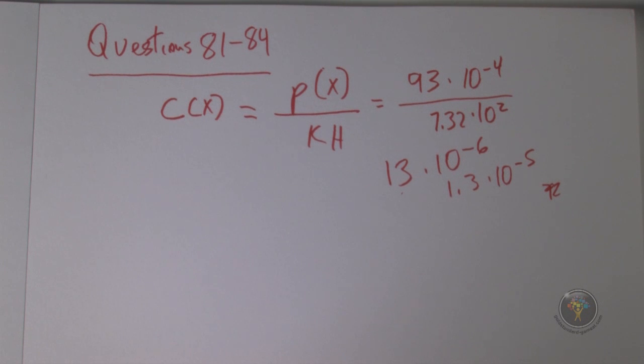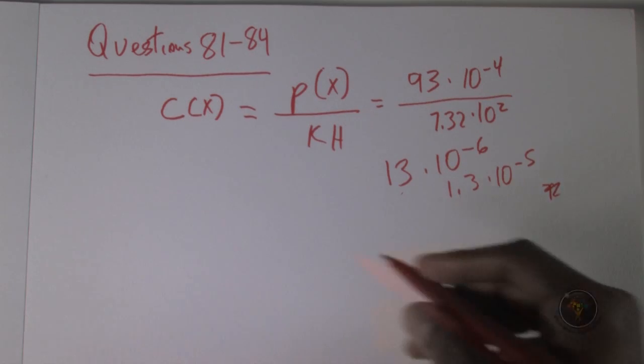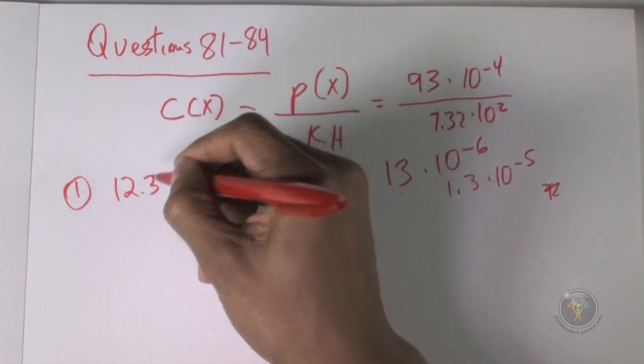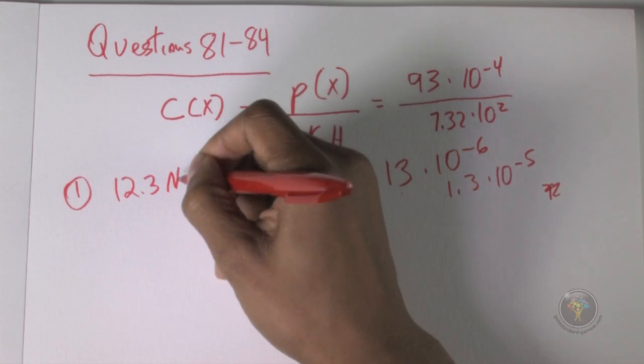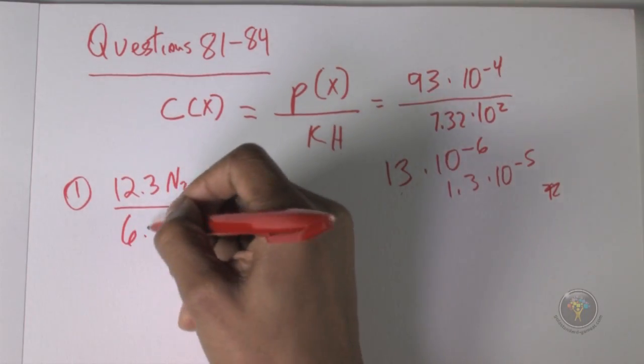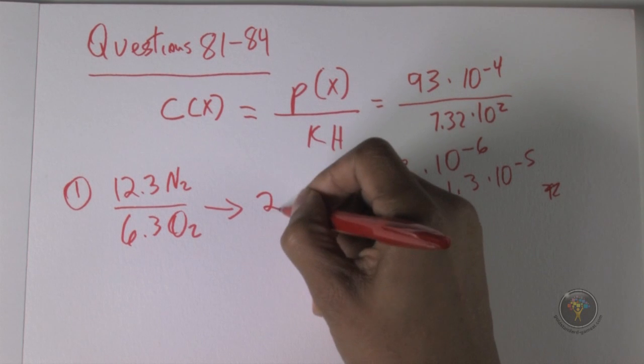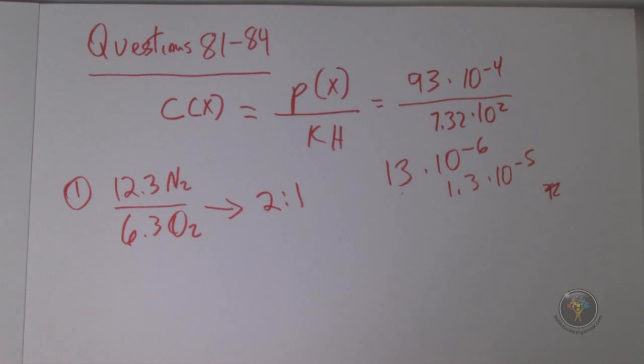They give you this information in question 81. In question 81 they have a sample of blood plasma equilibrated with air, and the extracted air had 12.3 mils of nitrogen and it had 6.3 of oxygen. So that is a ratio of two to one. That's pretty rare to have a question like that.